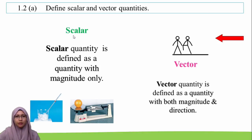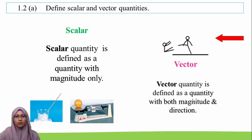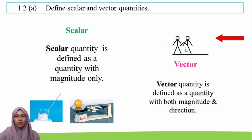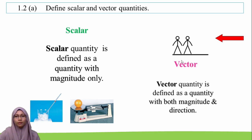Let us first understand the meaning of scalar and vector. Scalar quantity is defined as a quantity with magnitude only. And vector quantity is defined as a quantity with both magnitude and direction. For example, this boy is kicking the other boy — he gives a force to this boy. This force has both magnitude, which is the strength of the force, and direction, which is the direction of the force towards this boy.